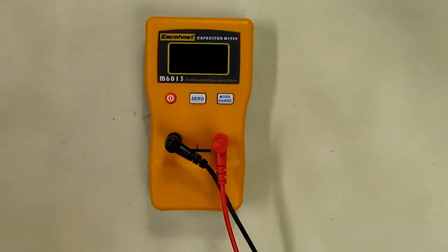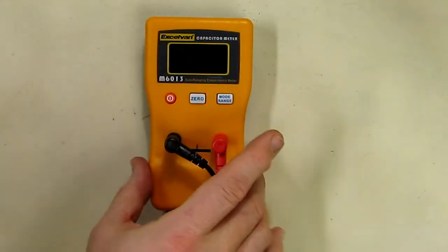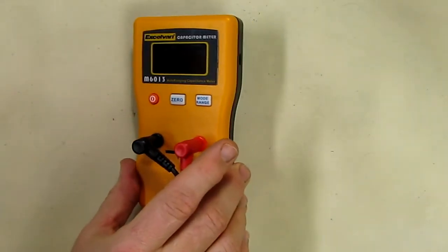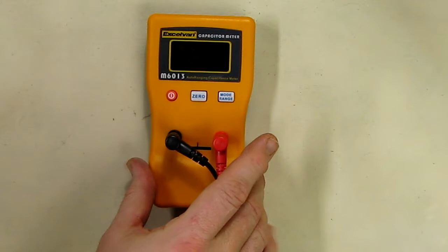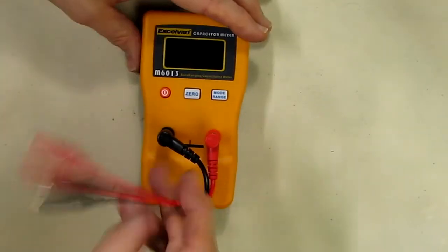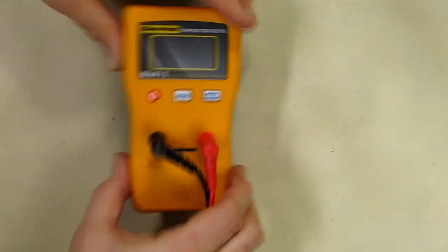Hello again, this is Rob Veach. This is my video review of a capacitance meter made by a company called Accelvin. This is the M6013 auto-ranging capacitance meter. It comes as you see with two clips included.